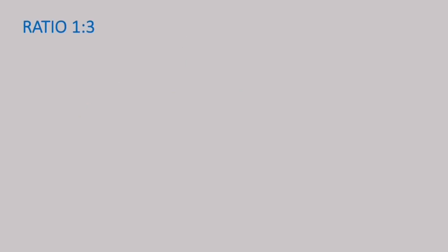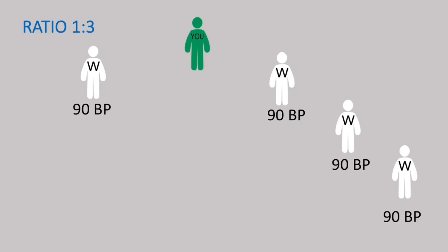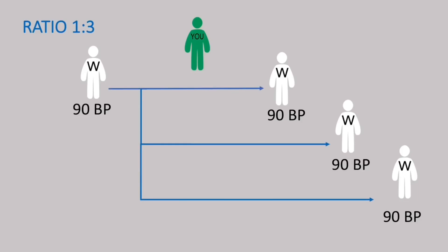Here is the best 1 to 3 ratio. This is you — you invite one white package on your left and three white packages on your right. Each white package gets 90 binary points. The 1 to 3 sum ratio gives a total of 360 binary points, or 36 euros.